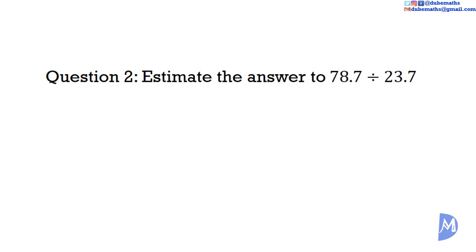Question 2. Estimate the answer to 78.7 divided by 23.7. I see 75 divided by 25 which is 3. Some of you may be seeing 80 divided by 20 which is equal to 4. The actual answer 3.32 to two decimal places. Like I said, either 3 or 4 is good enough. It is just a quick calculation.